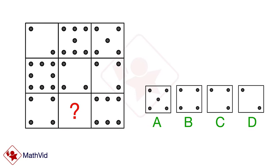Let's count the points in each row. They all add up to 14, right? So what should we put in the empty spot to make the last row also 14? That's right, it's option B. Good job.